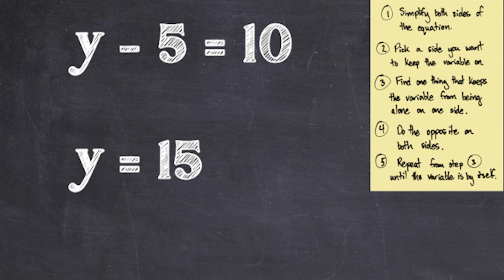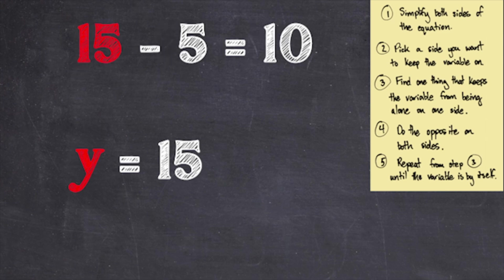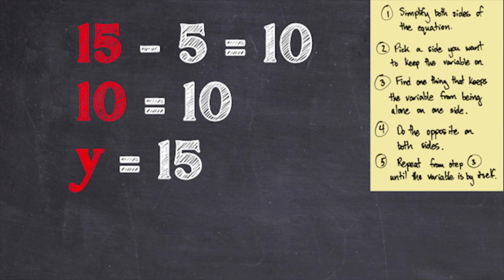Something nice about solving equations is that you can easily check your work. Let's look at our original equation: y minus 5 equals 10. Substituting y with 15, we get 15 minus 5 is 10, and 10 is definitely equal to 10, so our solution is correct.